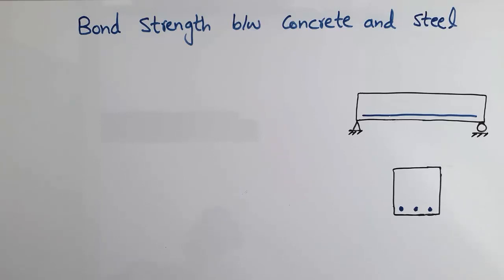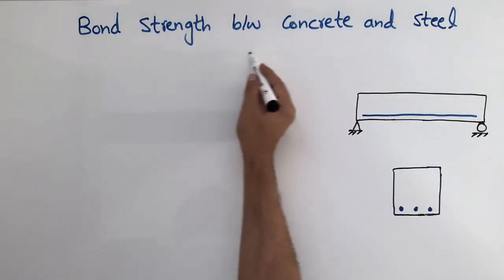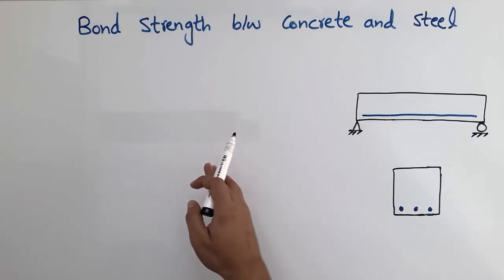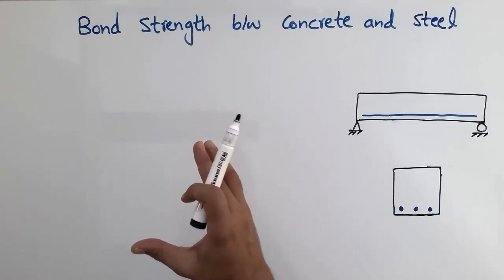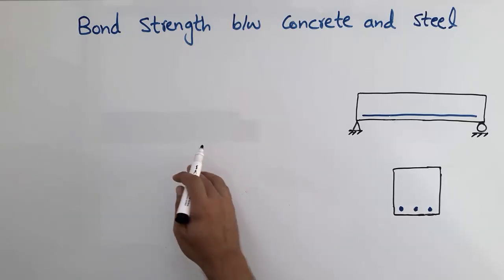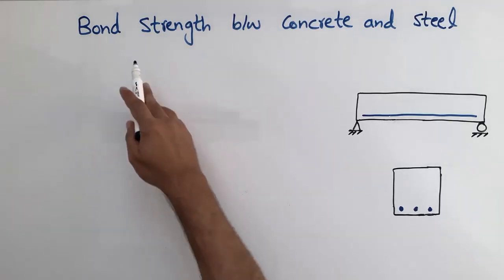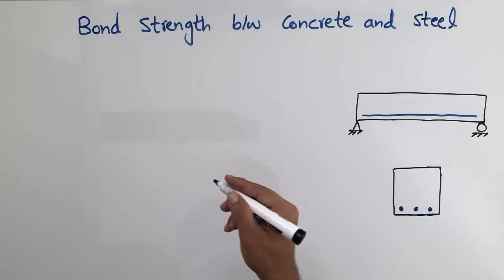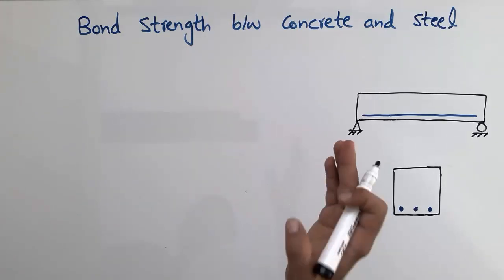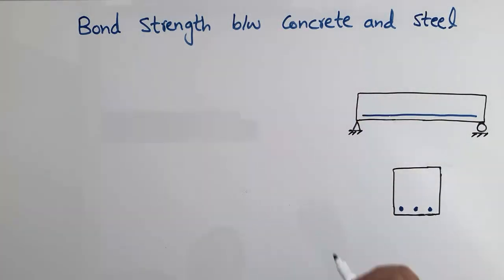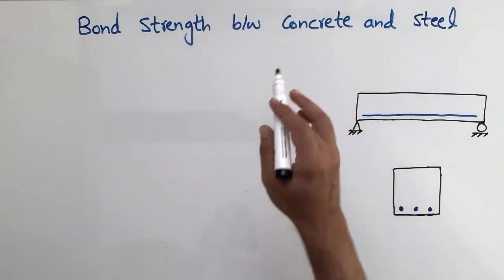Hello guys, welcome back to DC1 Engineering YouTube channel. Please subscribe our channel for DC1 Engineering videos. Today our lecture is about the bond strength between the concrete and steel. The bond strength is very important for the structure member to take the load and transfer the load safely to the other structure member. We are going to discuss the main factors which affect the bond strength between the concrete and the steel.